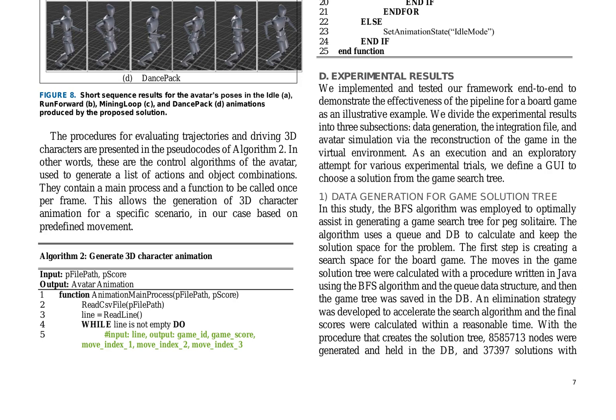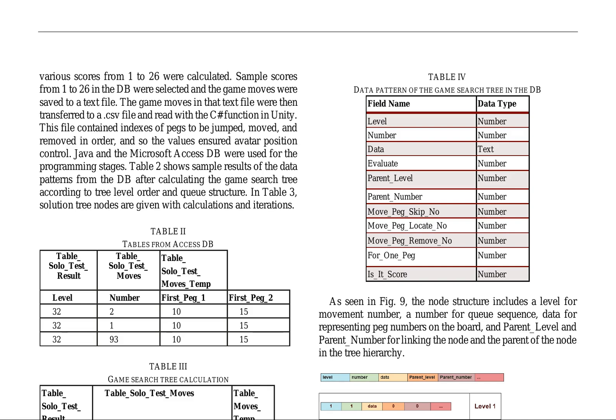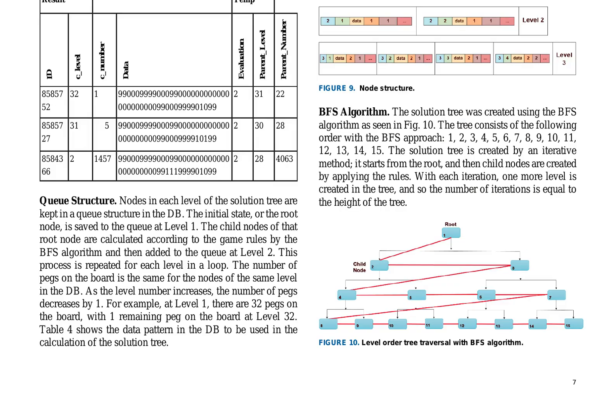The experimental results are divided into three subsections: data generation, the integration file, and avatar simulation via the reconstruction of the game in the virtual environment. The breadth-first search algorithm is employed to generate a game search tree for PEG Solitaire, and an elimination strategy is developed to accelerate the search algorithm and calculate final scores within a reasonable time. The BFS algorithm creates the solution tree by iteratively adding child nodes to the queue, mirroring the game's rules. The process starts from the root node, and each level is added in sequence, with the number of pegs on the board decreasing by one with each level, reflecting the game's progression.